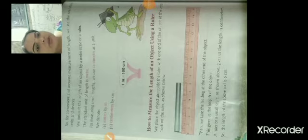For measuring small length we use centimeter as a unit. We denote meters by m and centimeter by cm. 1 meter is equal to 100 cm and 1 km is equal to 1000 meters.